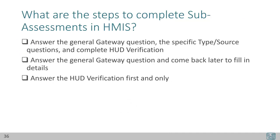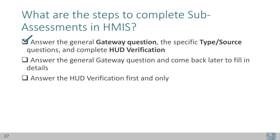So what are the steps to complete sub-assessments in HMIS? Answer the general gateway question, the specific type or source questions, and complete the HUD verification. Remember, it's as easy as 1, 2, 3: answer the gateway question, then the specific type or source questions, and complete the HUD verification. Thank you for watching this Introduction to HMIS Data Entry Training, Part 4, Project Start.